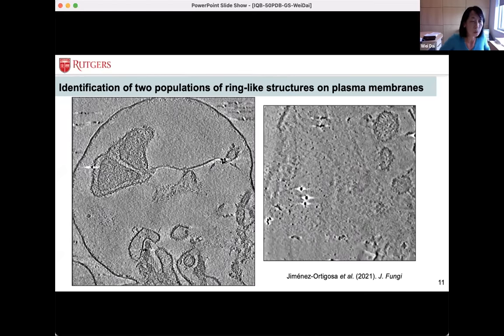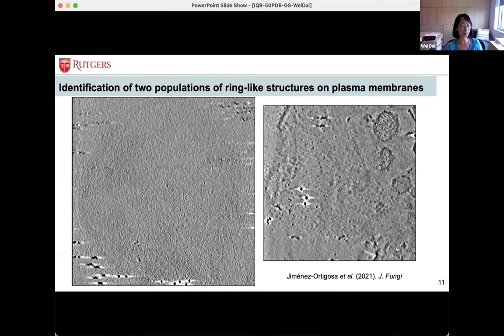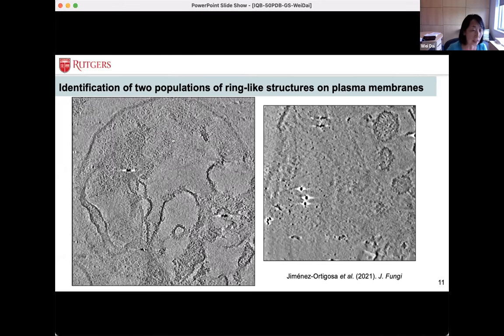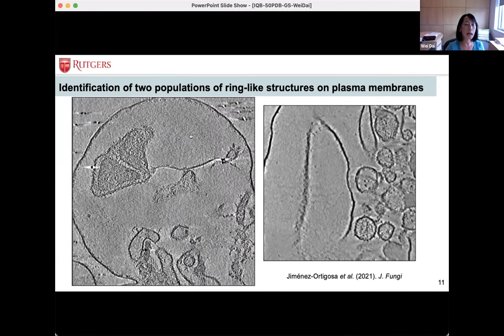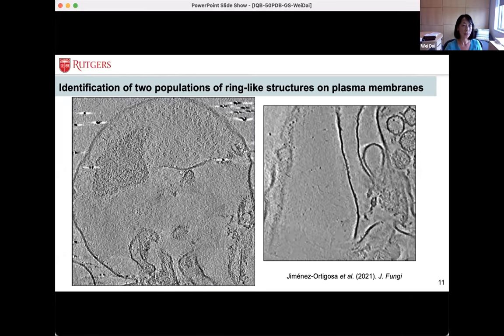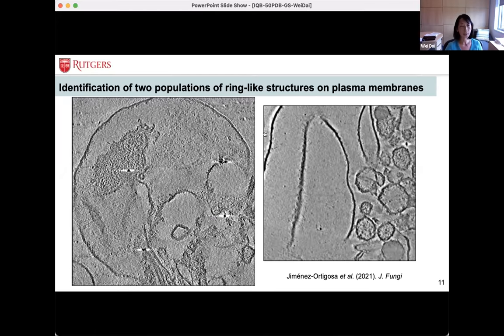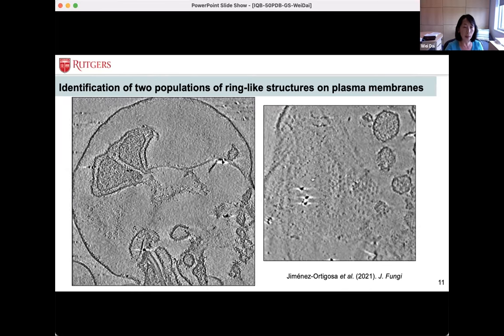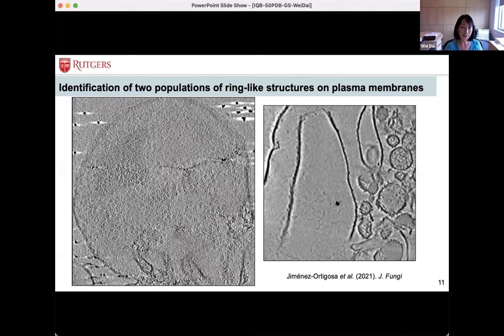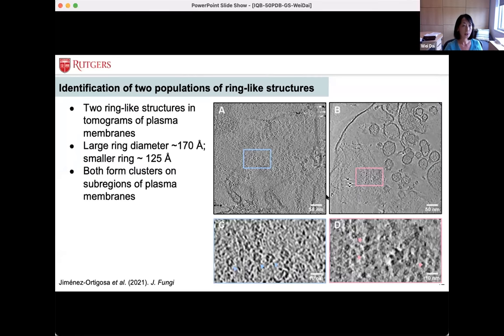Here I'm showing you two tomograms reconstructed from tilt series. The most obvious or abundant structure we can identify on those tomograms is a ring-like structure with a diameter of about 170 angstroms. Those ring-like structures seem to form clusters across big regions of the membrane. The second structure we can identify from tomograms is a smaller ring-like structure about 125 angstroms in diameter. They also form clusters across the membrane. Here I'm showing the section view of the two tomograms so that you can clearly compare the morphology and sizes of the two ring-like structures.